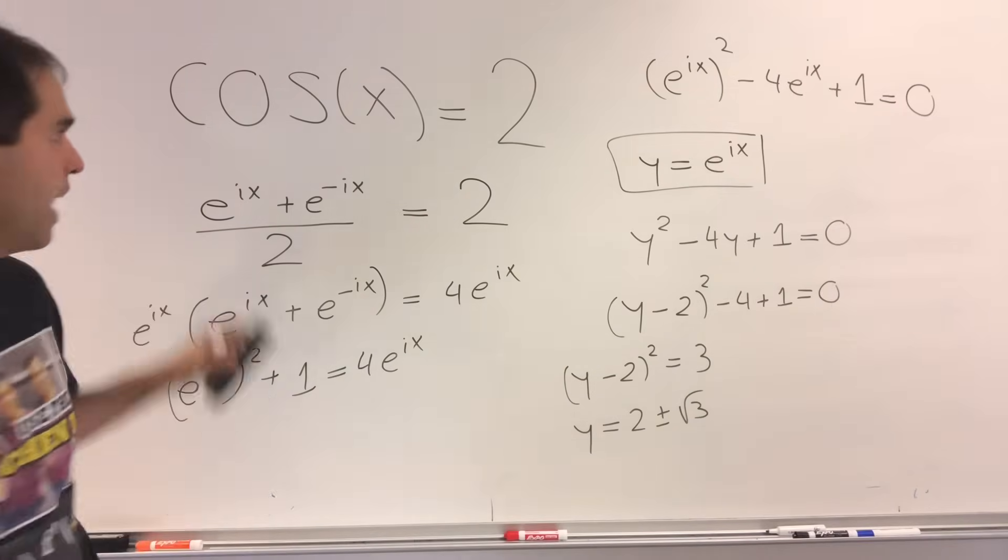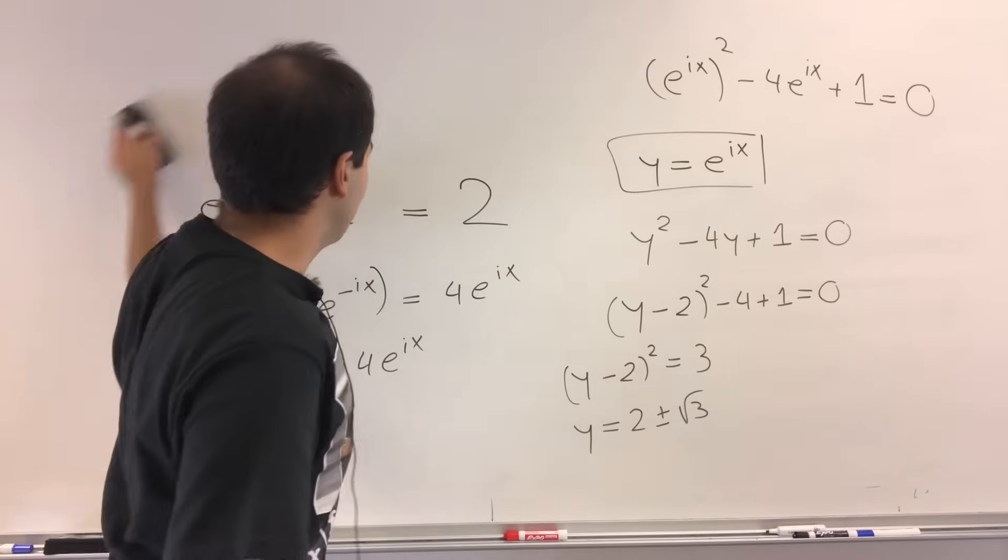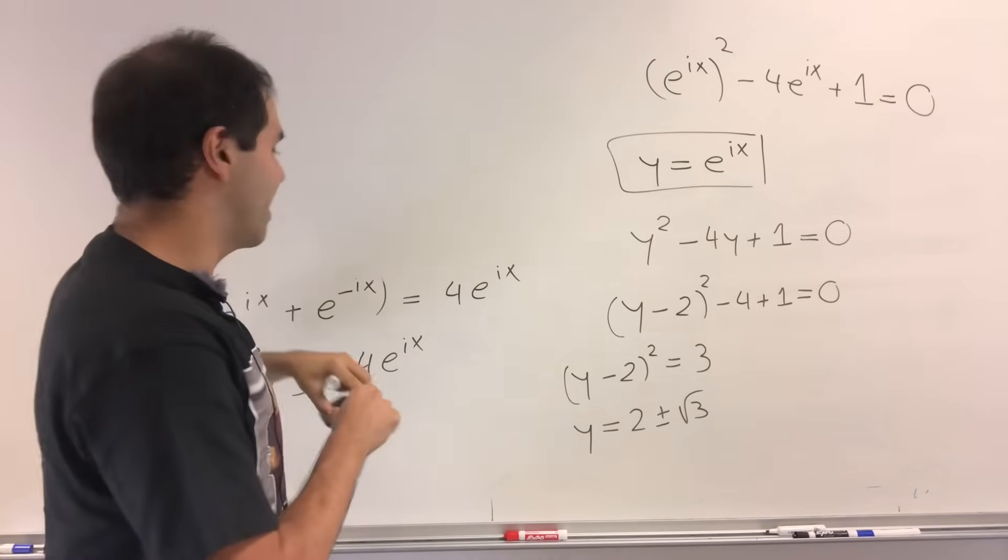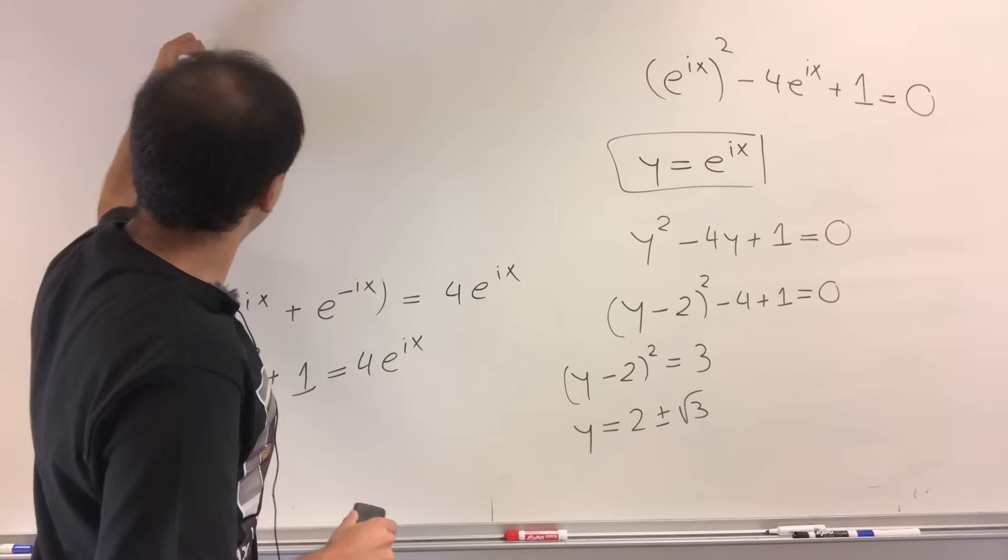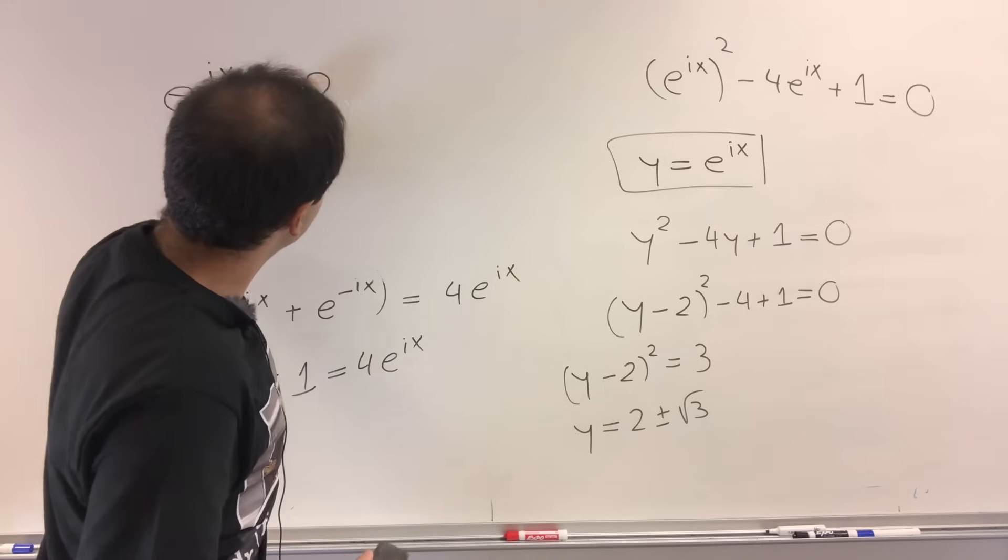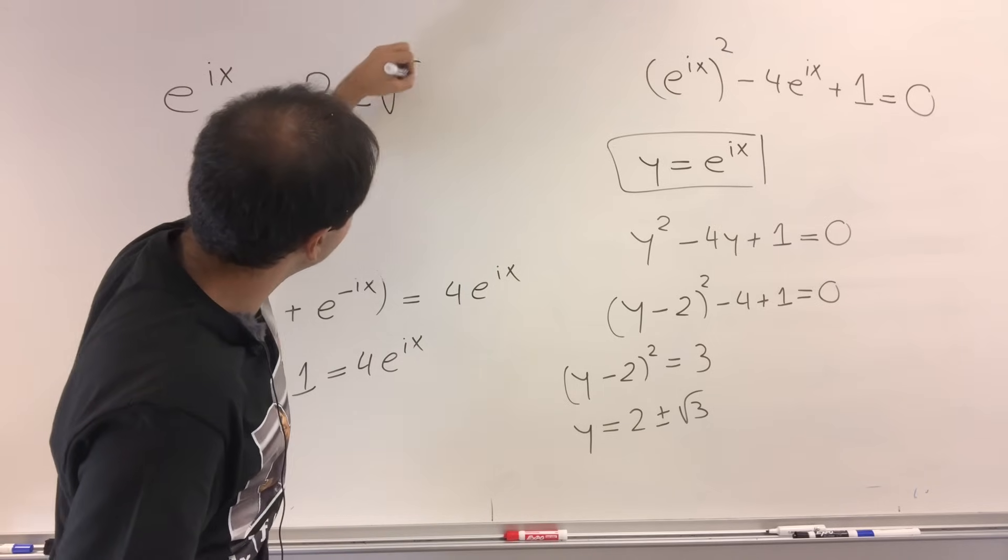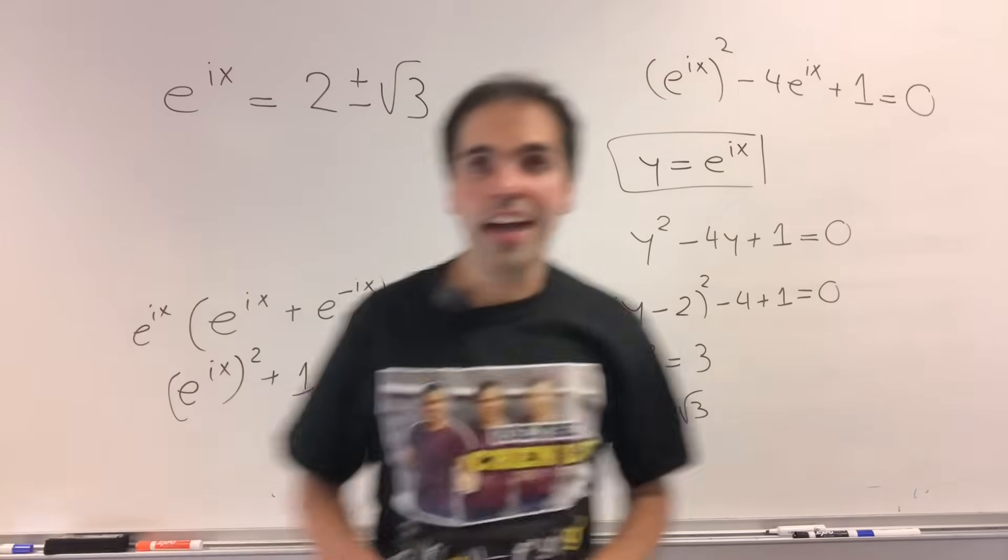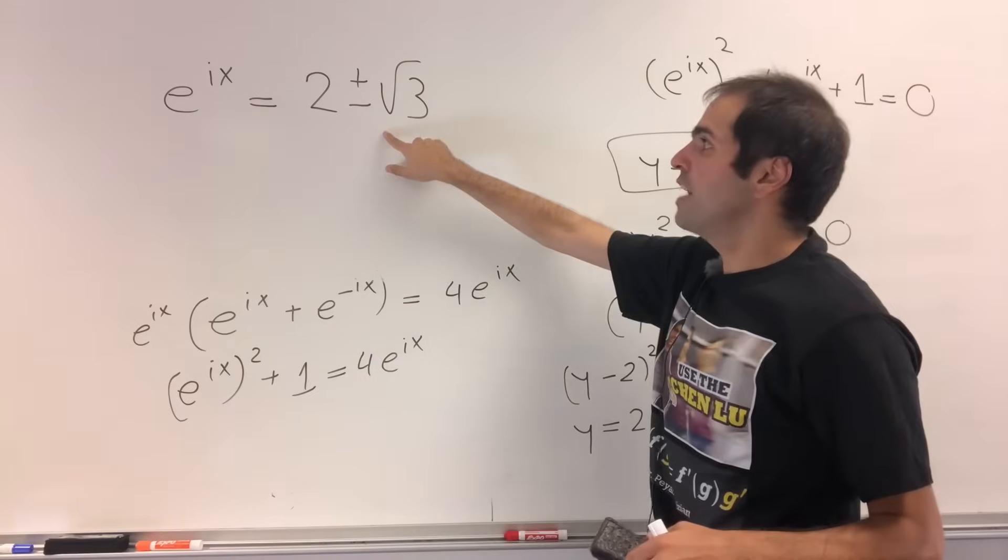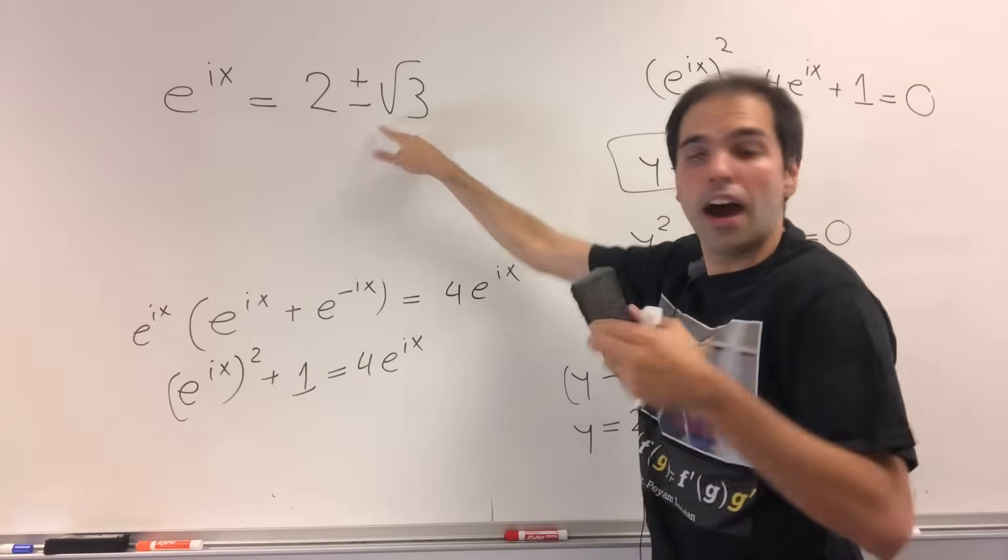So what did we obtain? We ultimately obtained that e to the ix equals 2 plus or minus square root of 3. And the idea is simply now write this in the form e to the i something.